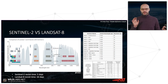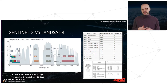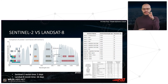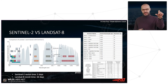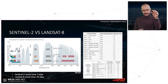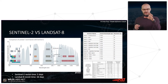It's useful to compare Sentinel-2 to Landsat 8 because they're similar in terms of objectives. What we see here are the different bands from Landsat 8 compared to Sentinel-2 and Landsat 7. At the top of this figure are all the different bands in Sentinel-2, and in the middle is Landsat 8.